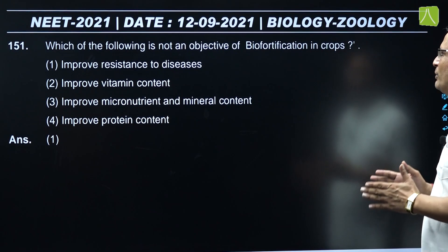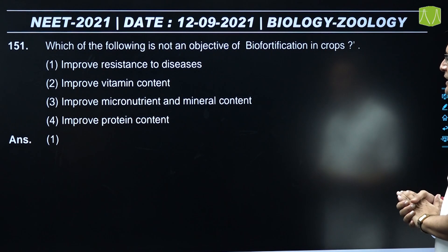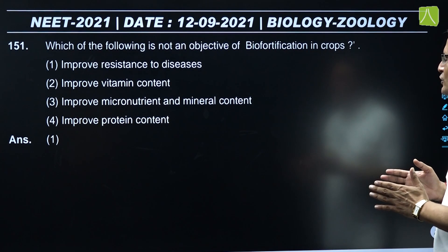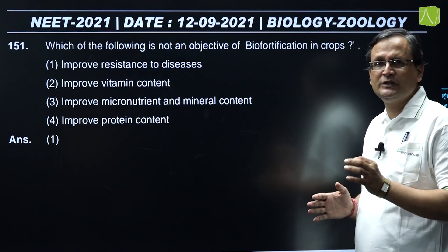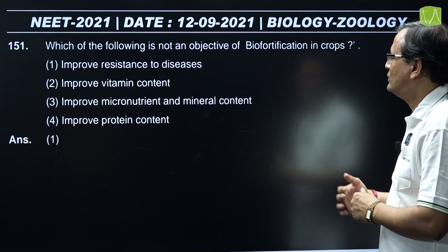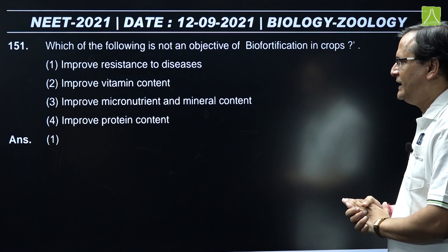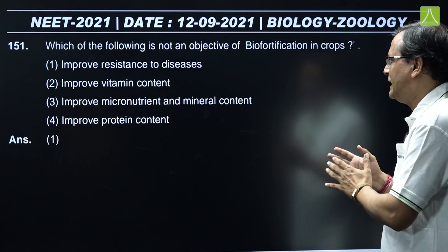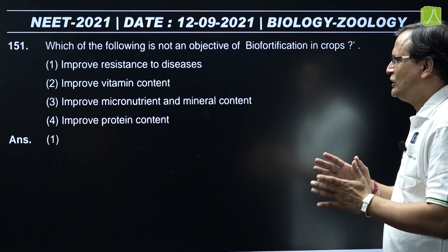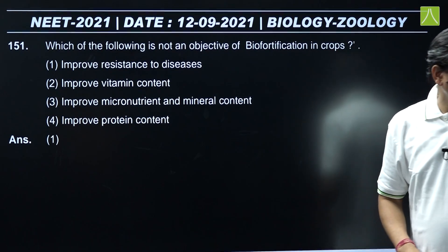Question 151: Which of the following is NOT an objective of bio-fortification in crops? Option 1 - improve resistance to diseases - this is wrong as an objective of bio-fortification. Option 2 - improve vitamin content - correct objective. Option 3 - improve macronutrient and mineral content - correct objective. Option 4 - improve protein content - also correct objective. So option one is the wrong objective, and the correct answer is option one.